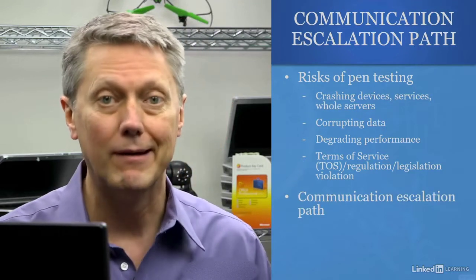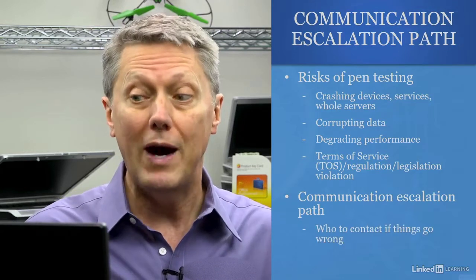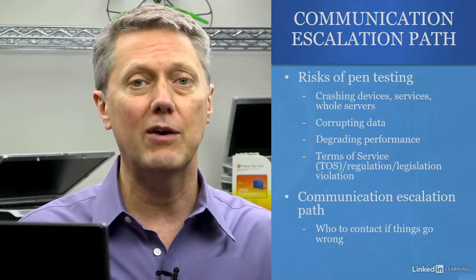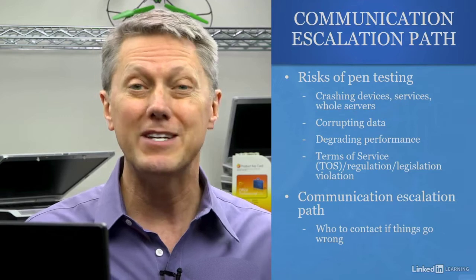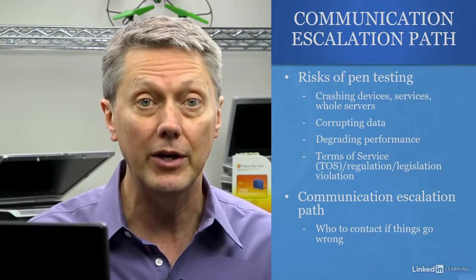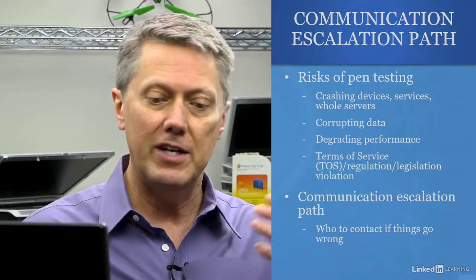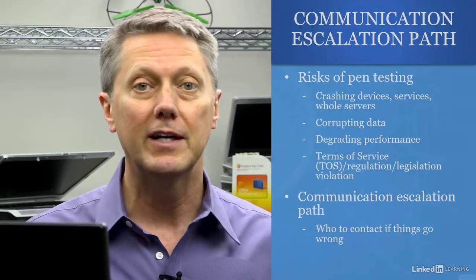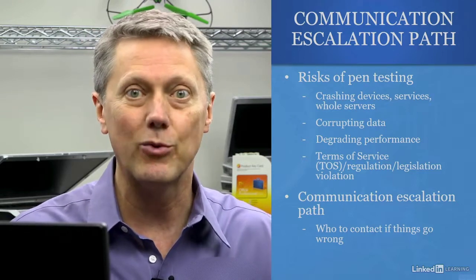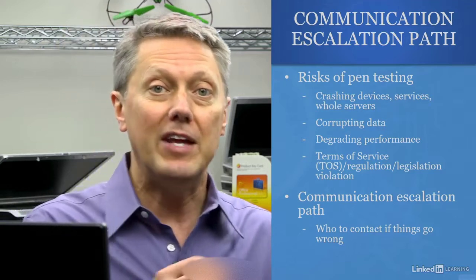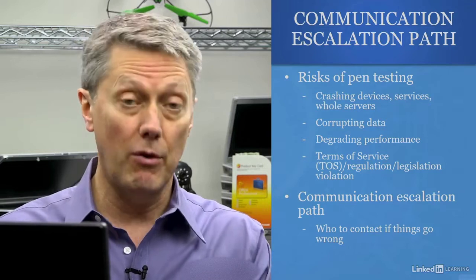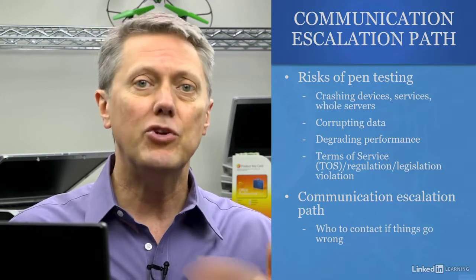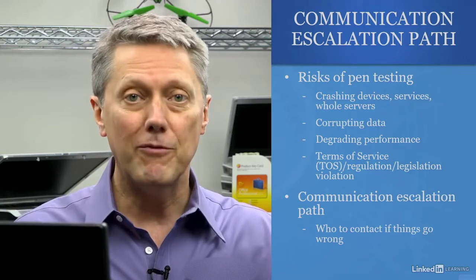So let's assume one of these bad things does happen — what do you do? First, you need to know who to communicate with. If you don't know who to communicate with in the client organization and something bad happens, you'll waste time figuring out who to call. If there's a performance problem, you call this person or these people. If it's a customer-facing issue — say you crash the client's web server so they can no longer accept orders — internal management and their support team need to know quickly. Fix the problem, but don't hide from the fact that something bad happened. And don't set the precedent that you only talk to your client when something bad happens.